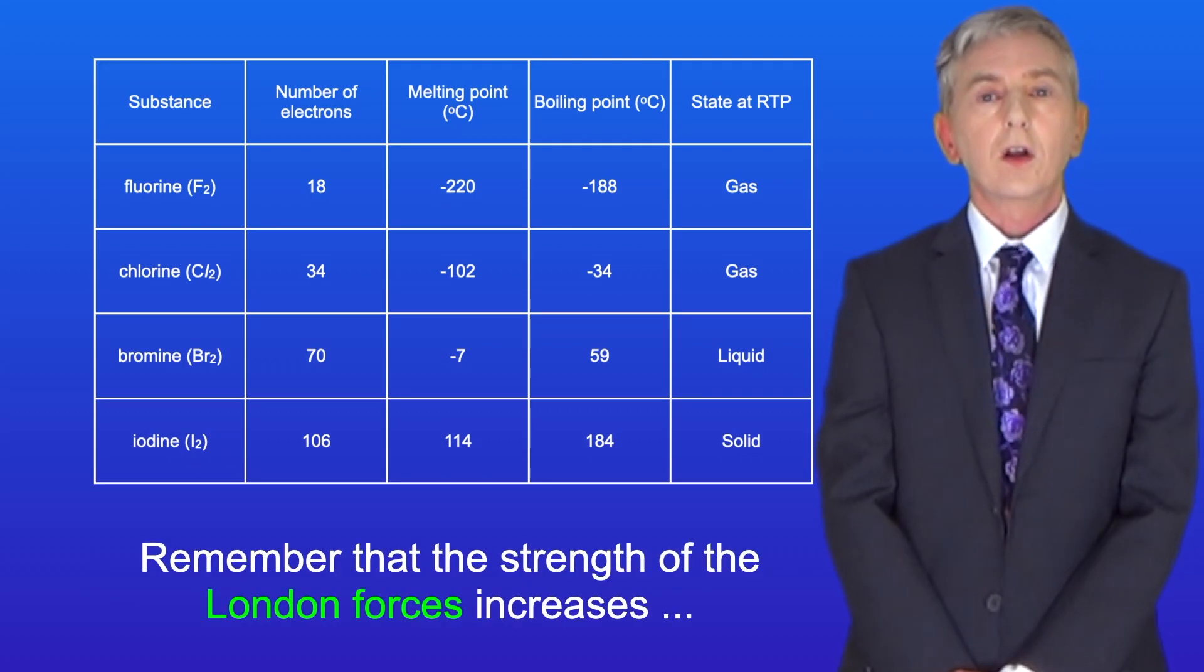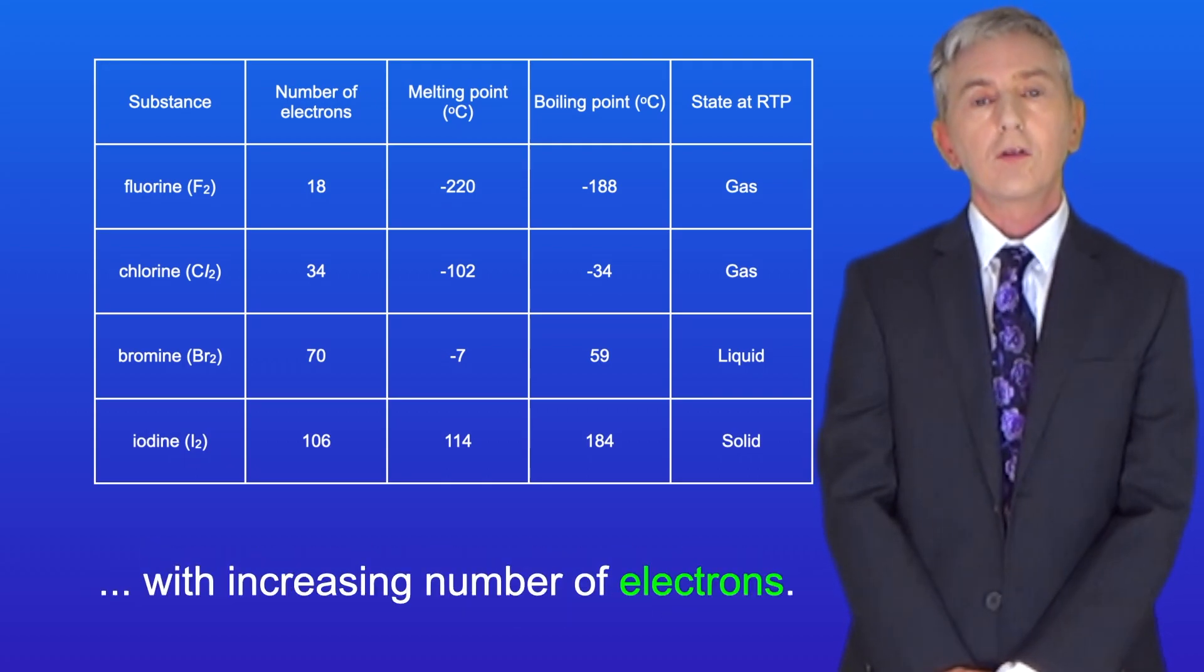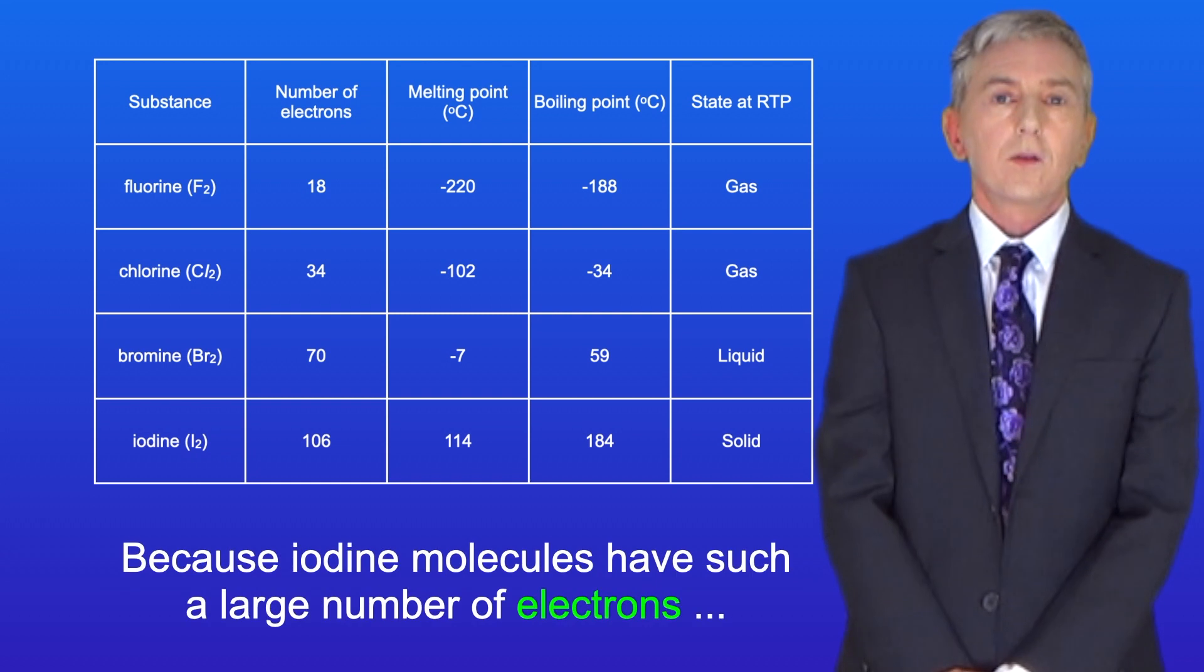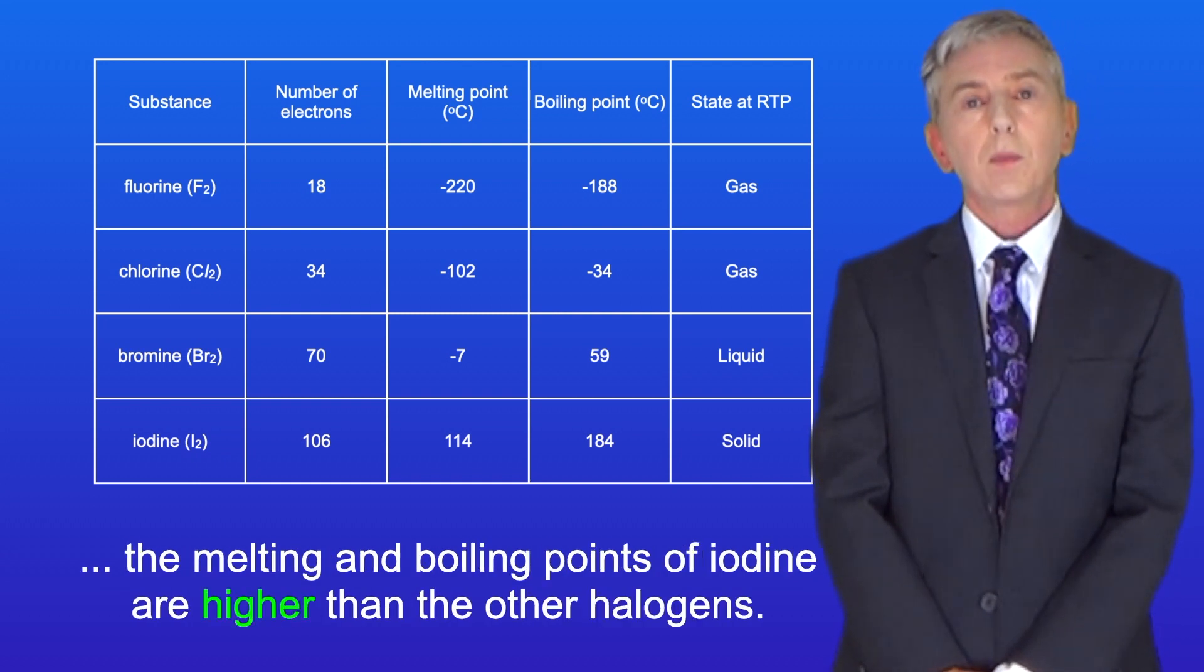Remember that the strength of the London forces increases with increasing number of electrons. So because iodine molecules have such a large number of electrons, the melting and boiling points of iodine are higher than the other halogens.